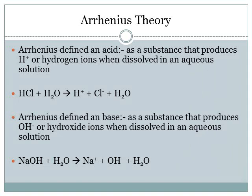Arrhenius defined an acid as a substance that produces H+, or hydrogen ions, also known as protons, when dissolved in an aqueous solution. As you can see from the first equation here, I have HCl, which is hydrochloric acid, dissolved in water, H2O. It goes on to produce H+, which is the hydrogen ions, and the chloride ions, in water.